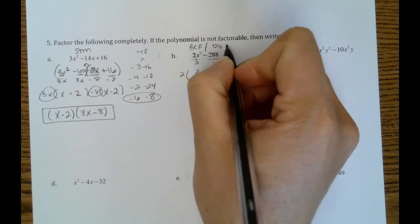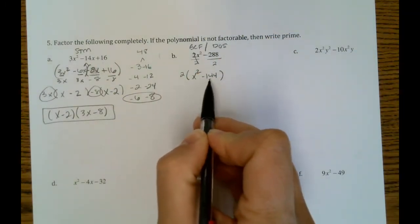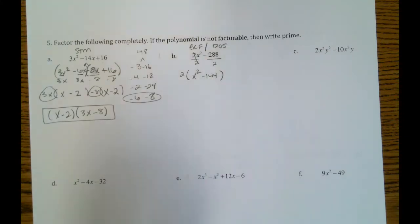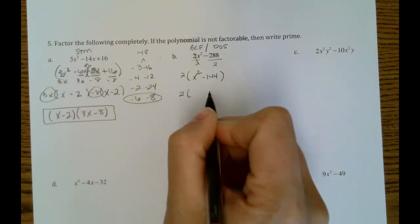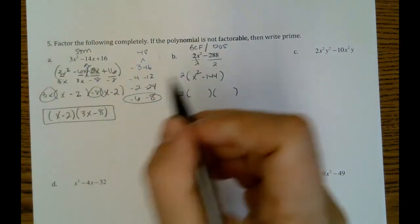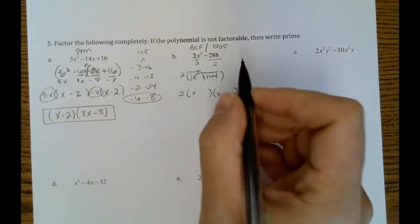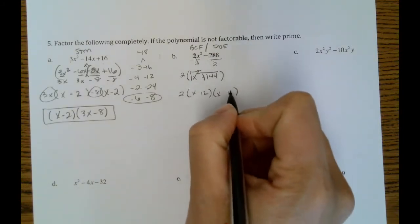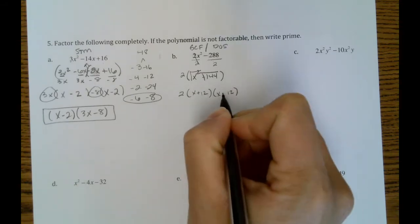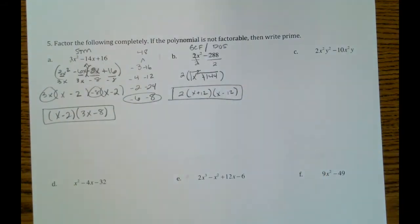We're also going to be able to do difference of squares because on the inside, now we have something that we can take the square root of. So we'll keep our GCF of 2. The square root of x squared is x. The square root of 144 is 12. One of them positive. One negative. And that'll be all for that one.